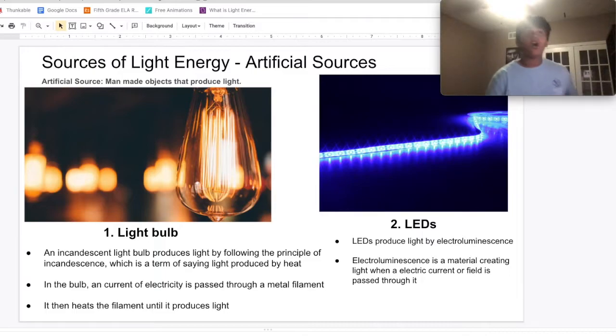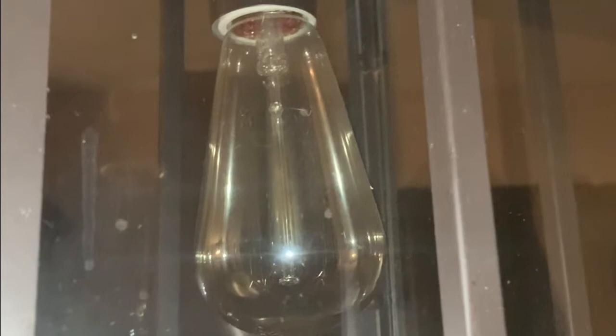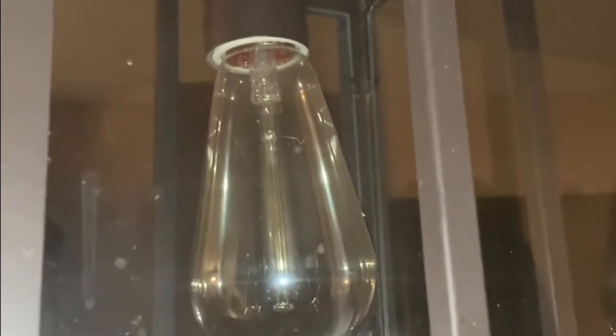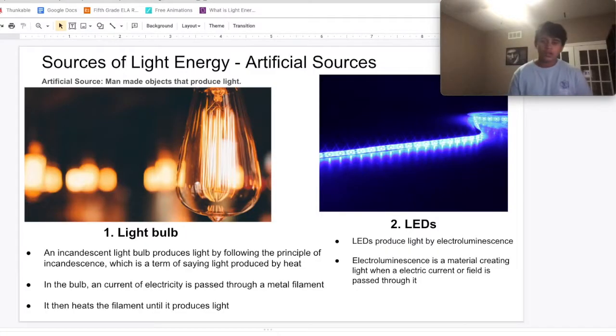So now to artificial sources, which are man-made. A light bulb is a great example of an incandescent light. A light bulb of light being created by heat. This principle of producing light is called incandescence.